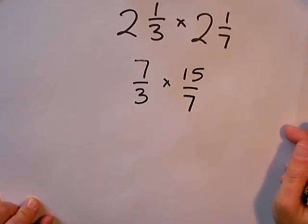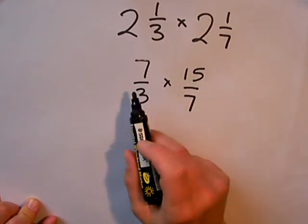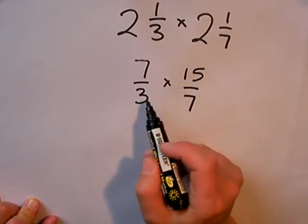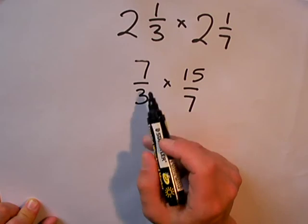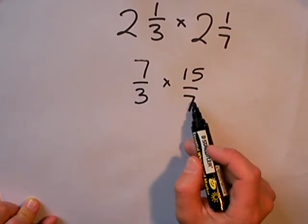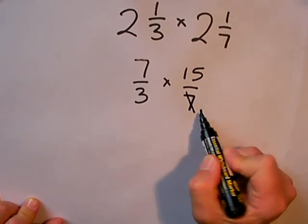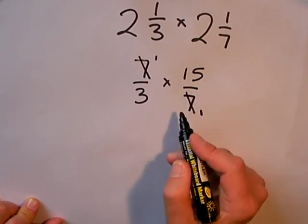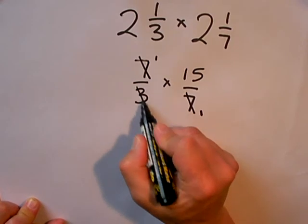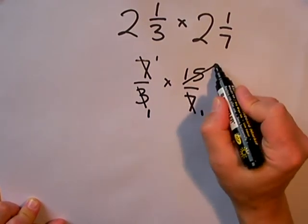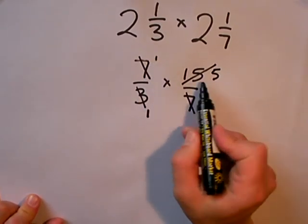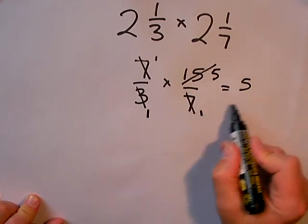Like before, I can look to see if I can cancel any numbers before multiplying. I could multiply 7 by 15 and 3 by 7 and get an answer, but I'm looking to see if I can cancel these numbers before I multiply. 7 and 7 cancel straight away. 7s into 7 go 1, 7s into 7 go 1. 3 and 15 also cancel because they can both be divided by 3. So 3s into 3 go 1 and 3s into 15 go 5. This leaves me with a very easy multiplication to finish off. 1 times 5 is 5 and 1 times 1 is 1.